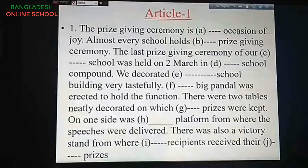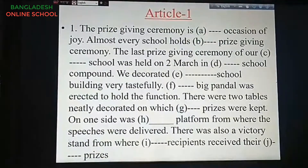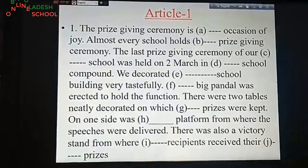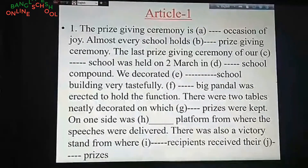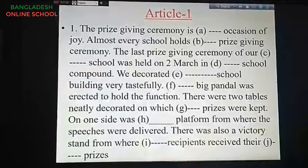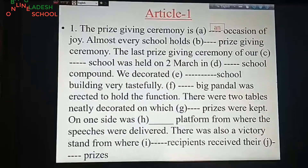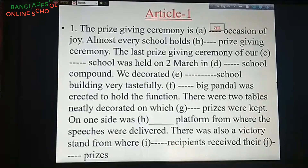Here in blank A, you see: 'The prize giving ceremony is [dash] occasion of joy.' Before 'occasion,' you will use the indefinite article 'an' — an occasion of joy. For blank B: 'Almost every school holds [dash] prize giving ceremony.' It is also indefinite, so 'a' is used — a prize giving ceremony.